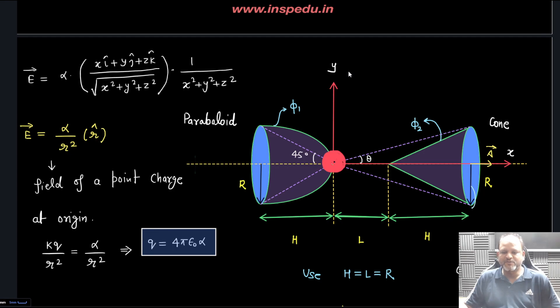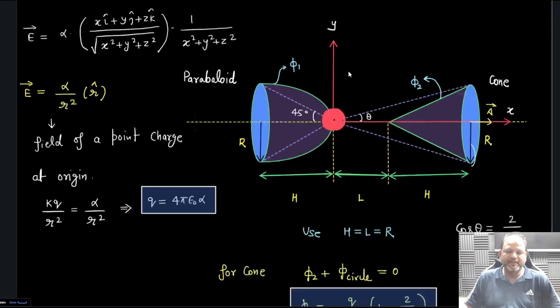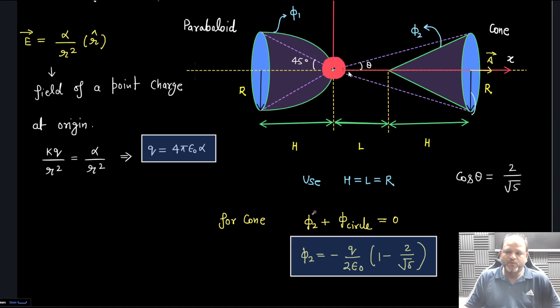Let's proceed. For cone, I can say Φ₂ and Φ_circle - these two combined, this is positive and this should be negative because field is this side and area vector is perpendicular. I can say Φ₂ + Φ_circle = Q_inside/ε₀.